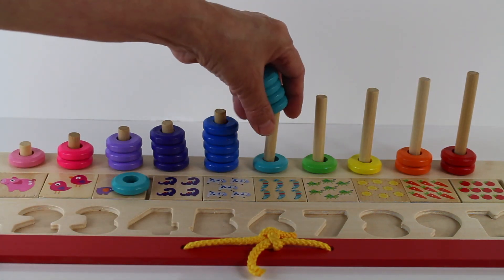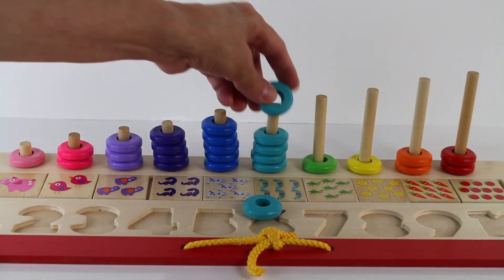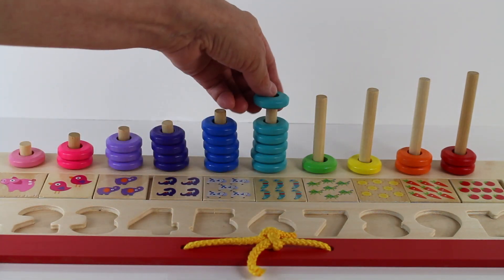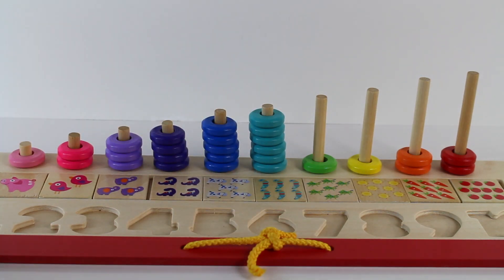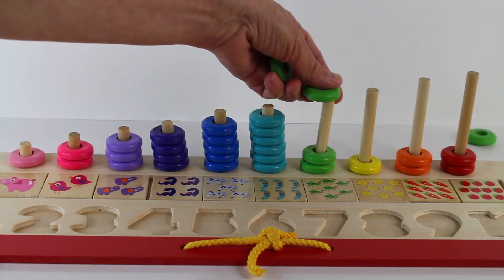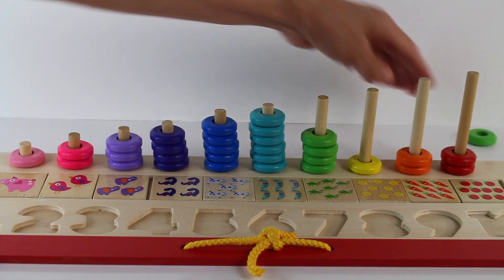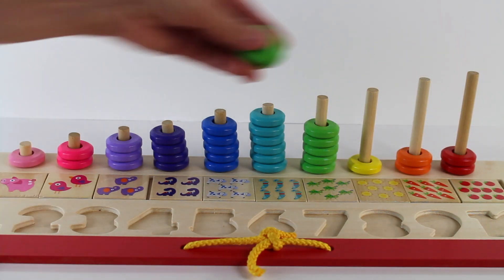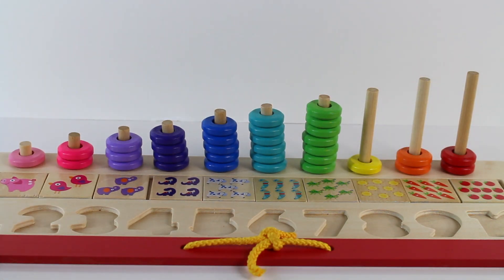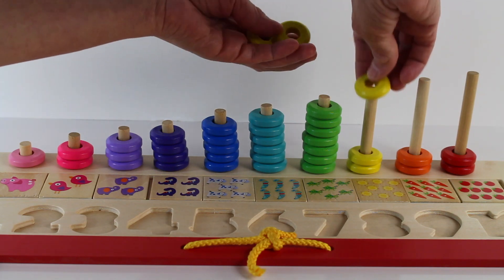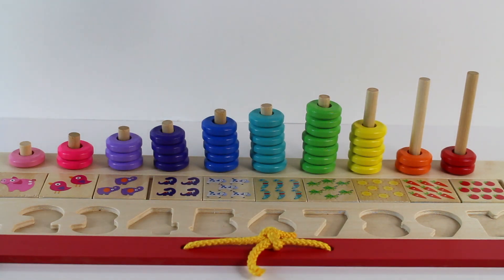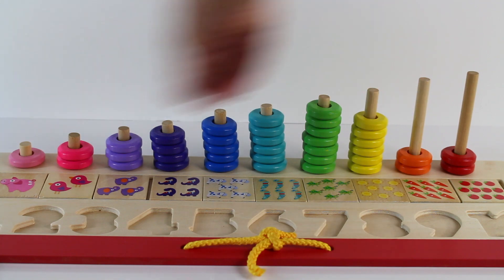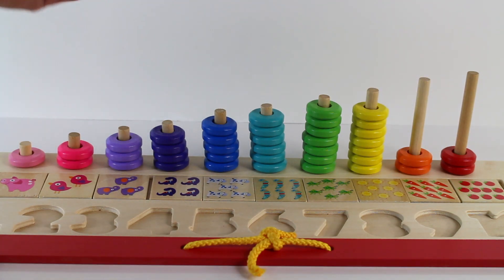We have 6 turquoise. We have 7 green, 1, 2, 3, 4, 5, 6, 7, 8.